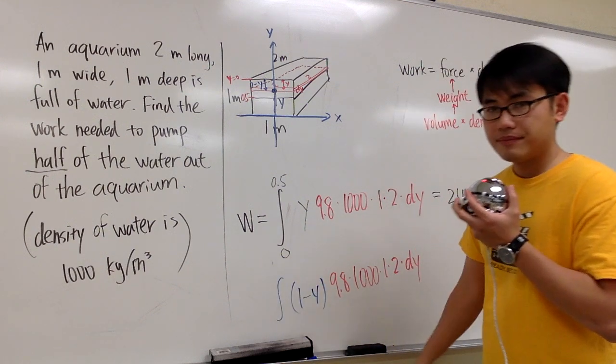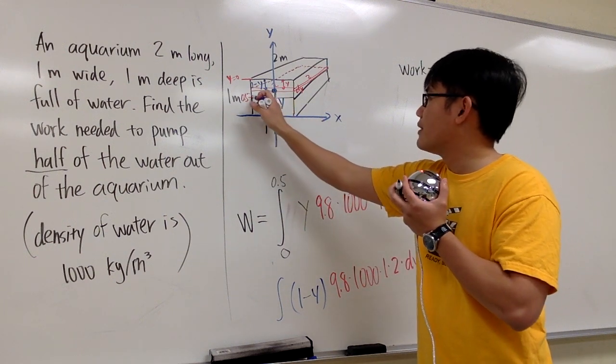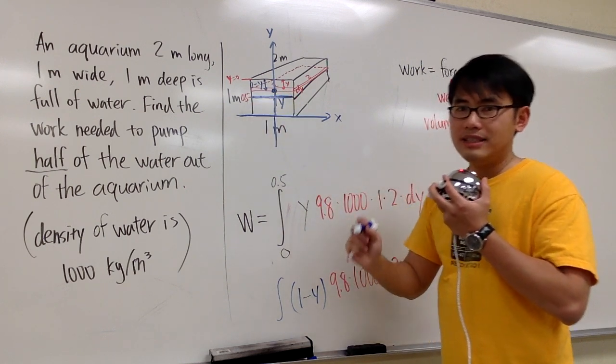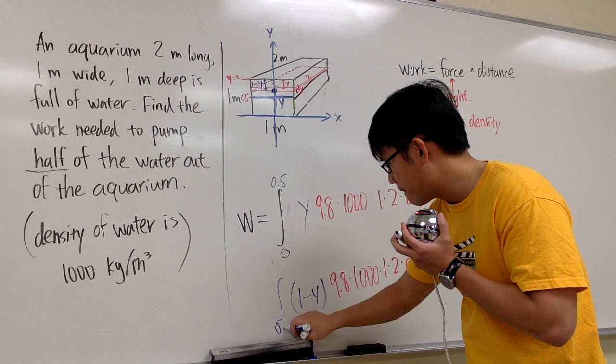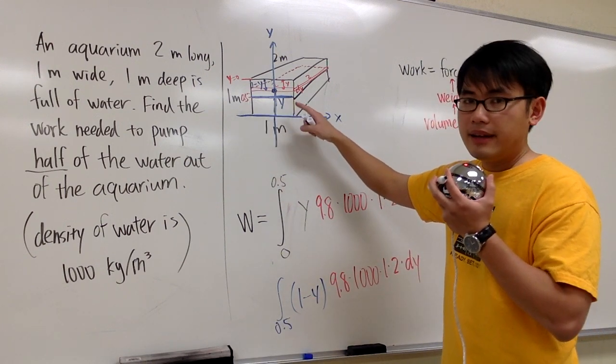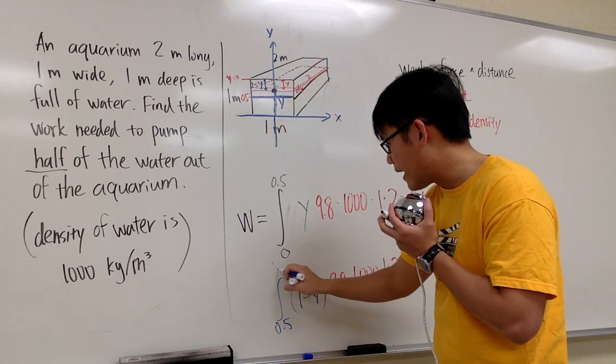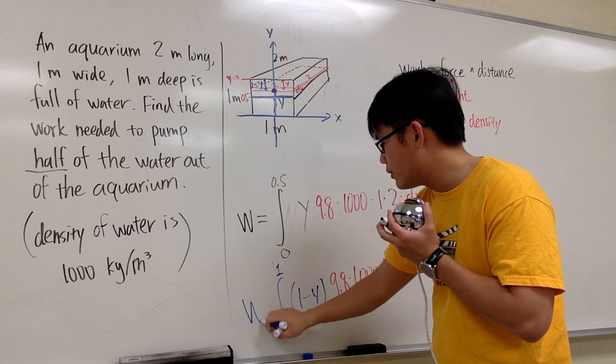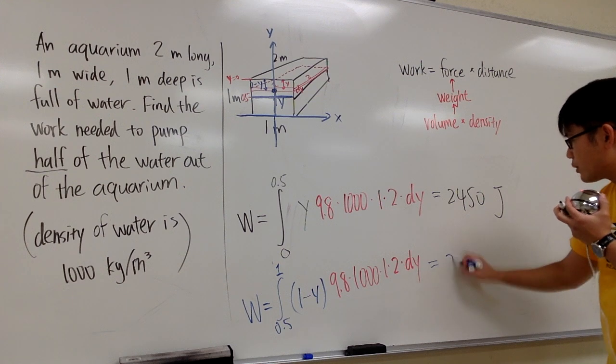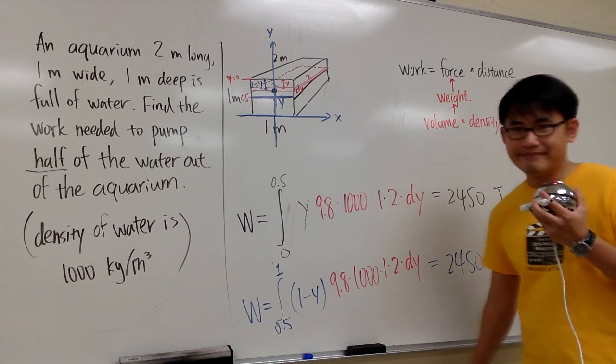How about the integration? Well, based on this, the first slice of water happens right here because we just want to go halfway. This will give us y is equal to 0.5. This right here is y is equal to 0.5. Then the last one is going to be up here, and based on that labeling, this is going from 0.5 to 1. This will also give you the work. If you compute this integral, the answer to this is also going to be 2450 joule. Depends on whichever labeling that you like. That's it.